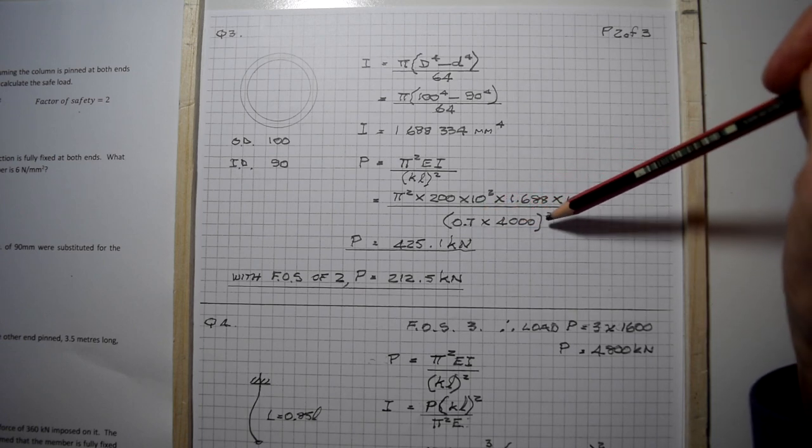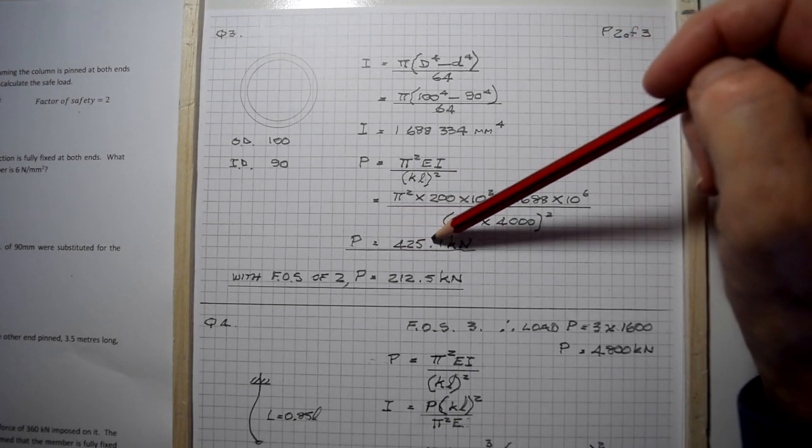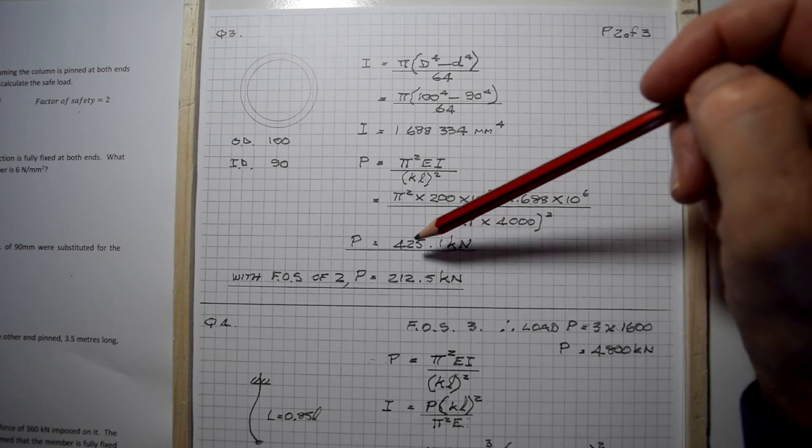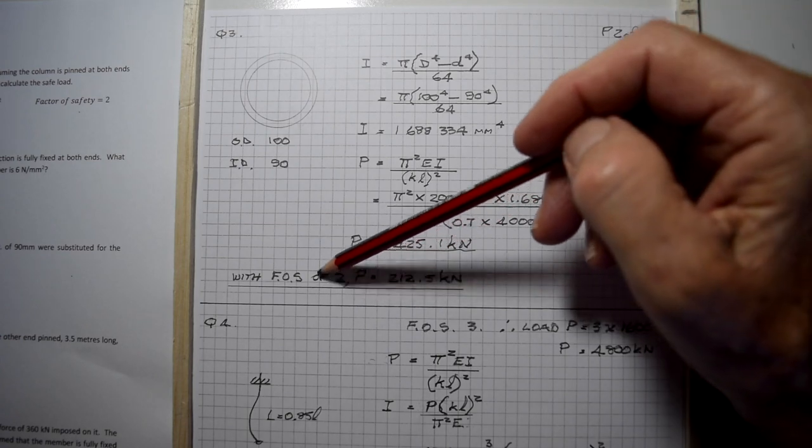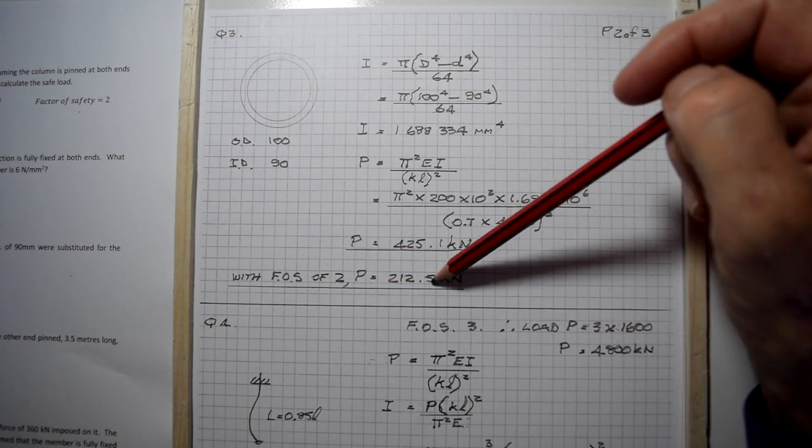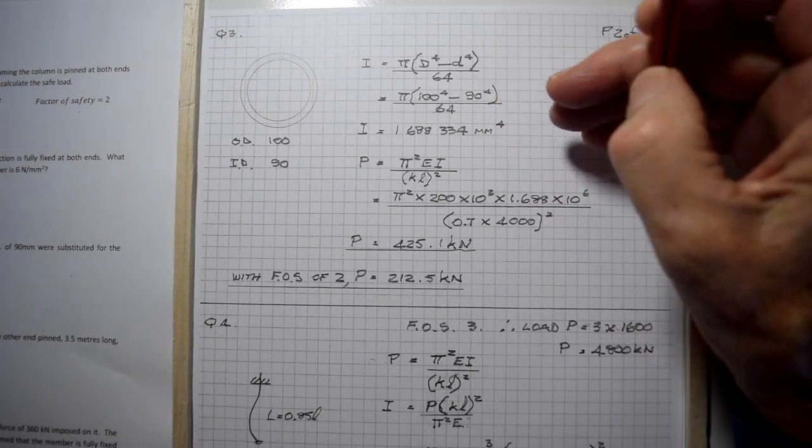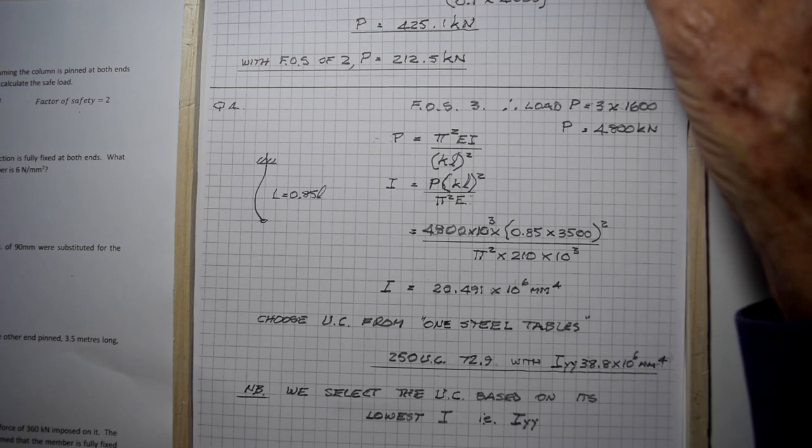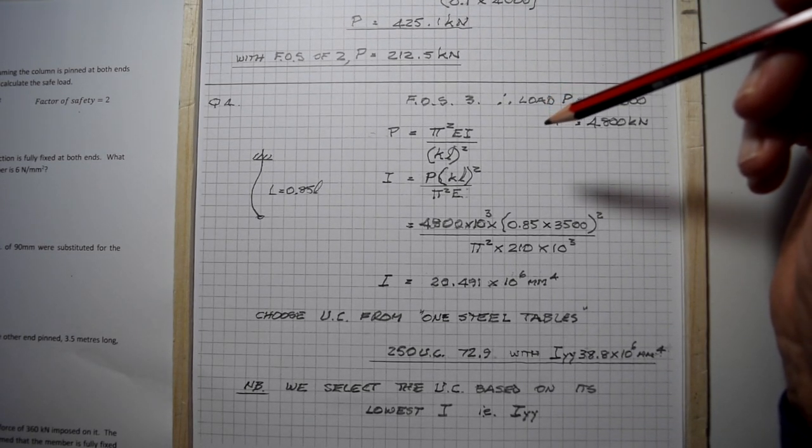Putting it into Euler's formula with the modulus of elasticity for steel 200 times 10 cubed and effective length of 0.7 times 4000 all squared, gives a load of 425.1 kilonewtons. With a factor of safety of two, the safe load is 212.5 kilonewtons.